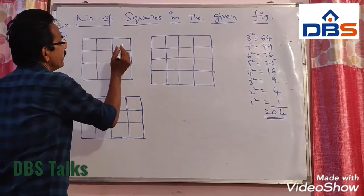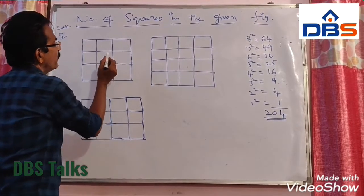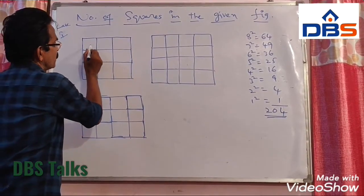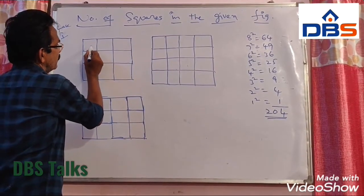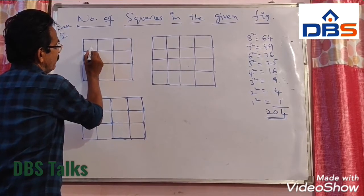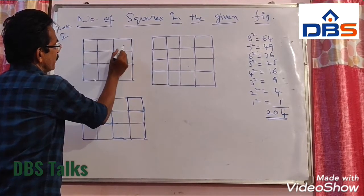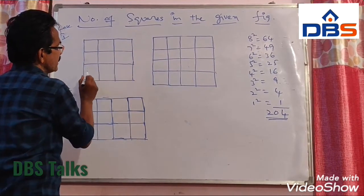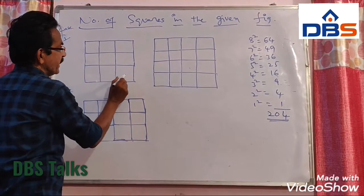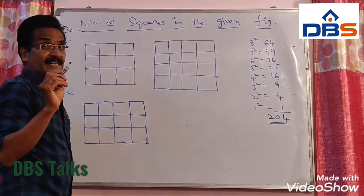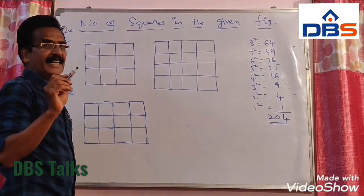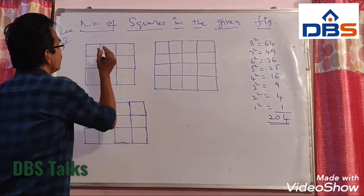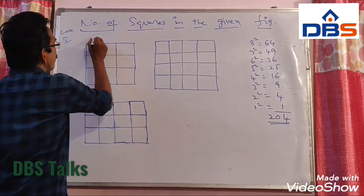See, how many smallest squares are there? 1, 2, 3, 4, 5, 6, 7, 8, 9 — 9 such squares are there. 9 means 3 squared.